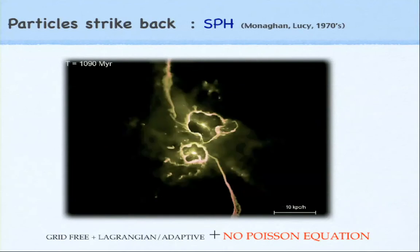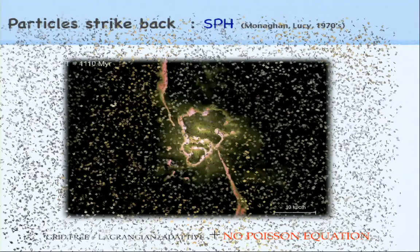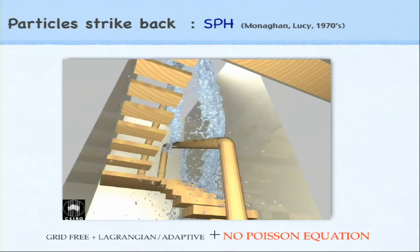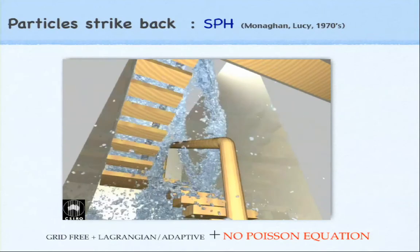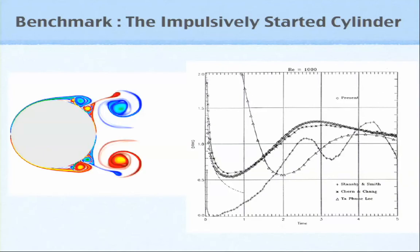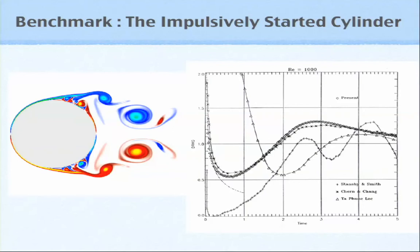I claim that the same things that killed vortex methods are lurking behind SPH simulations as well. So, what have we done to fix this? We can do SPH and all sorts of things — people also do incompressible SPH now. In the meantime, we fixed all of these issues. We're able to do boundary conditions, convergence, and show consistency, and we can actually tackle complex problems.